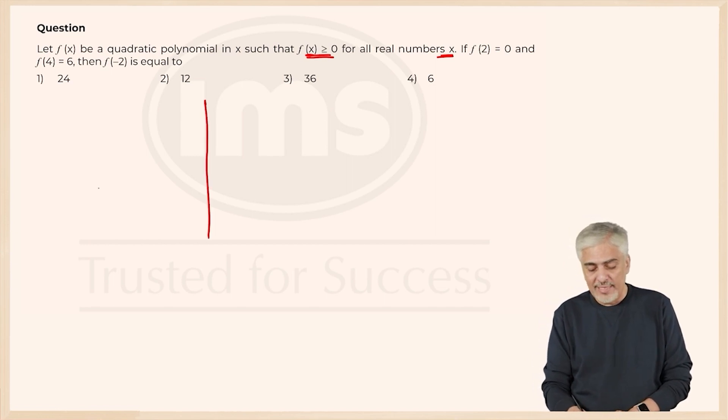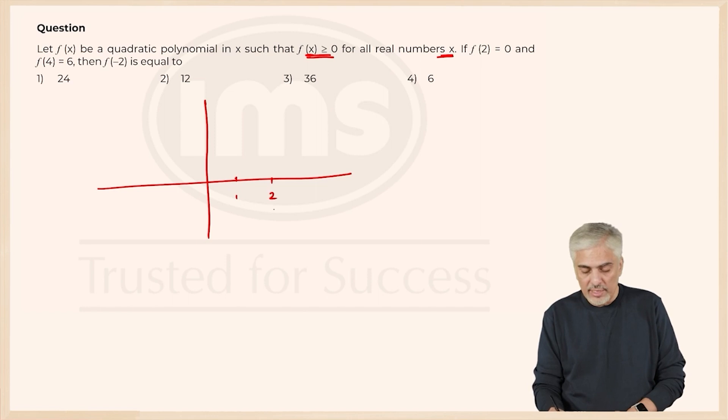Now, quadratic polynomial, we need to understand the graph of a quadratic polynomial. This is 1, this is 2. If f of 2 is 0, which means the graph is something like this.